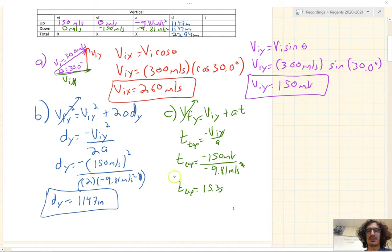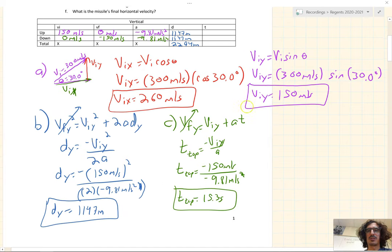So that's not the answer to the question. Let's fill in our charts. 15.3 to go up, 15.3 seconds to go down. Double it to get the total time. That's 30.6 seconds. So the answer to letter C is 30.6 seconds.